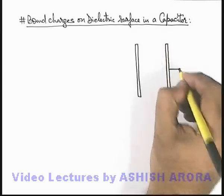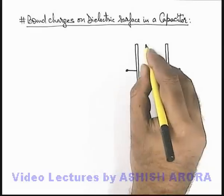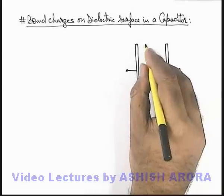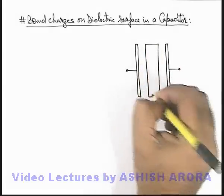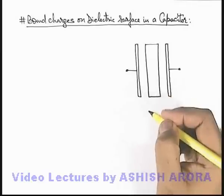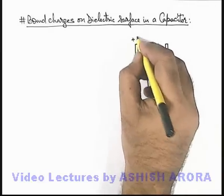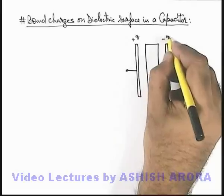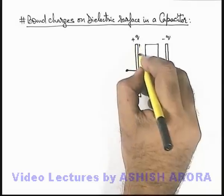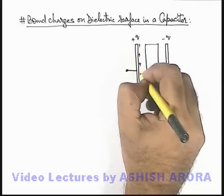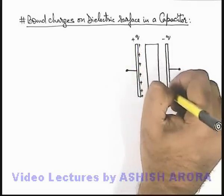This is a capacitor in which a dielectric slab is inserted, which is of surface area exactly equal to the plate area. In this situation, say the capacitor plates are having charges minus q and plus q. We know that these charges are uniformly distributed on the inner surface of these plates.